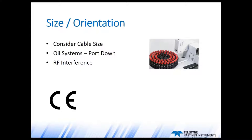Consider the size and installation of the vacuum gauge. Most companies provide outline drawings and step files to help with system design. When packaging analytical instrumentation, size can be very critical — not just for the gauge, but also for the cabling. If working with an oil-based pump, ideally you want the port of the gauge facing down. If designing for CE approval, you need to think about RF interference, as the installation location inside a chassis can have a large effect on the gauge's susceptibility to RF interference.